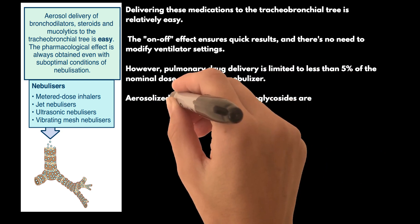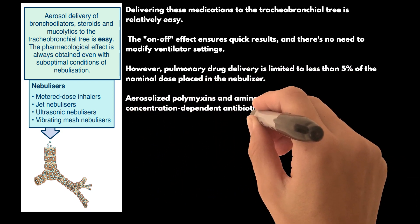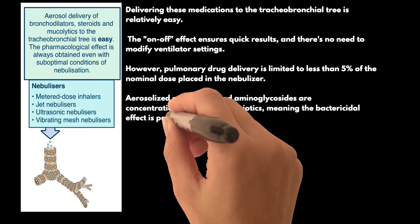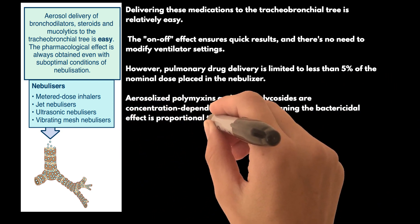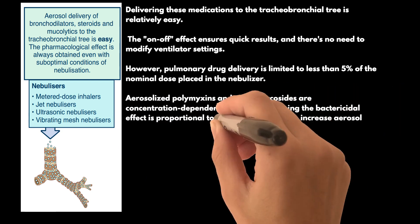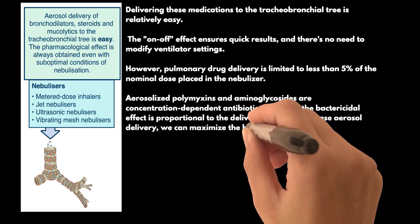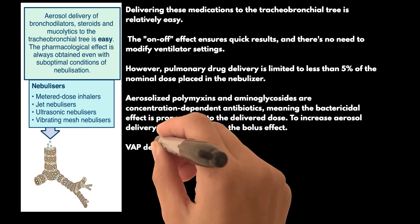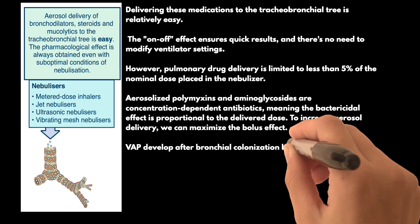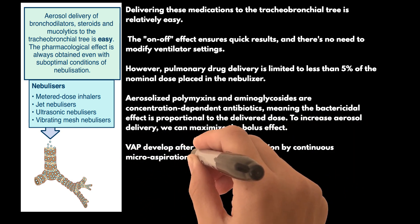When it comes to treating ventilator-associated tracheobronchitis (VAT) or cystic fibrosis bronchiectasis with inhaled antibiotics, the process is a bit different. Aerosolized polymyxins and aminoglycosides are concentration-dependent antibiotics, meaning the bactericidal effect is proportional to the delivered dose. To increase aerosol delivery, we can maximize the bolus effect.